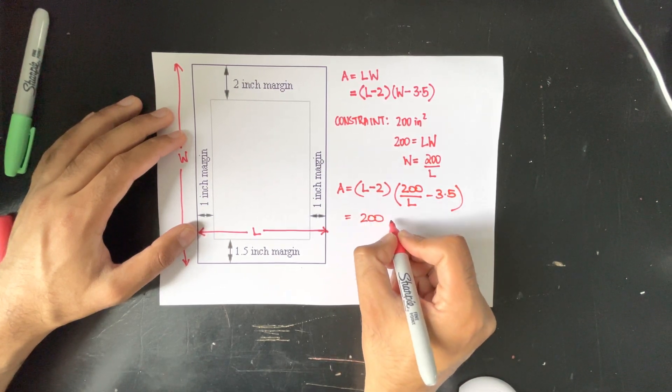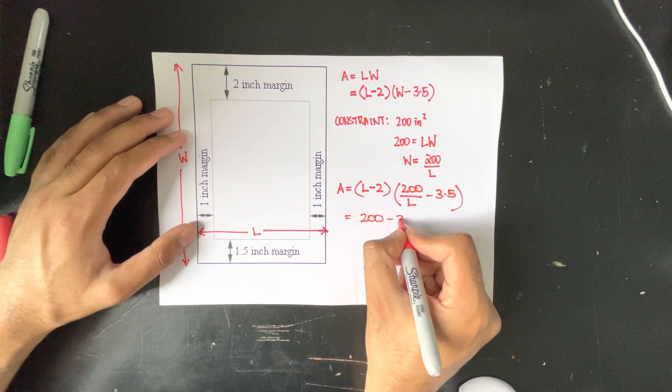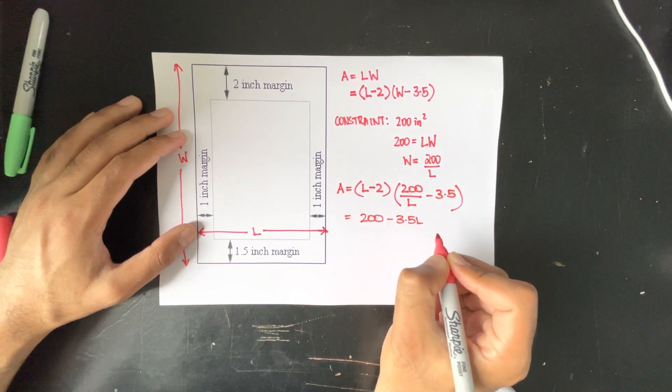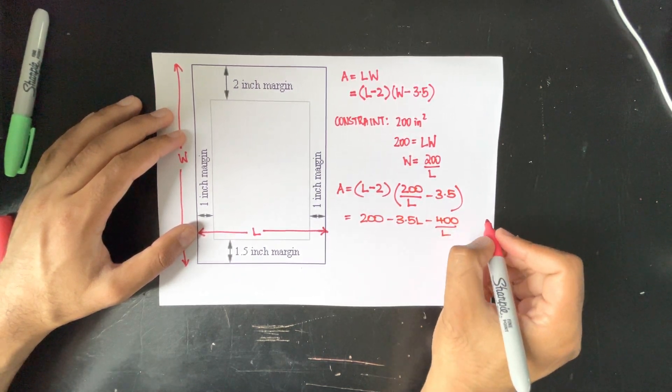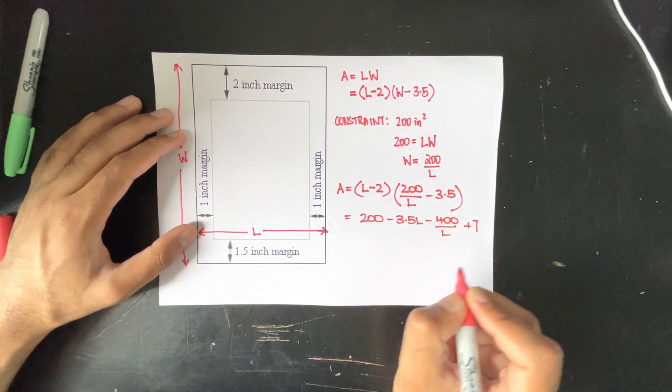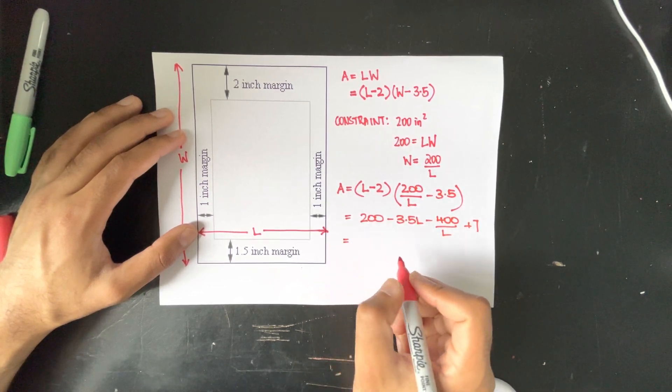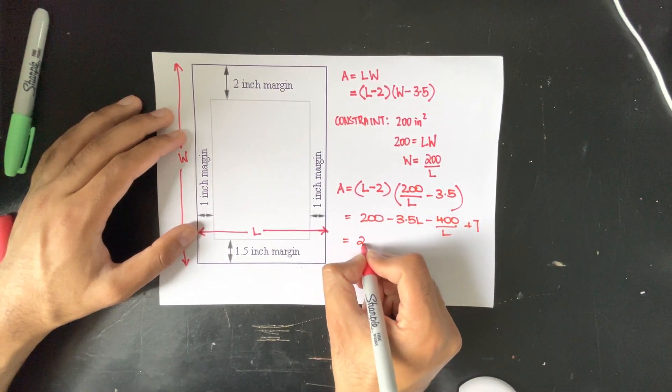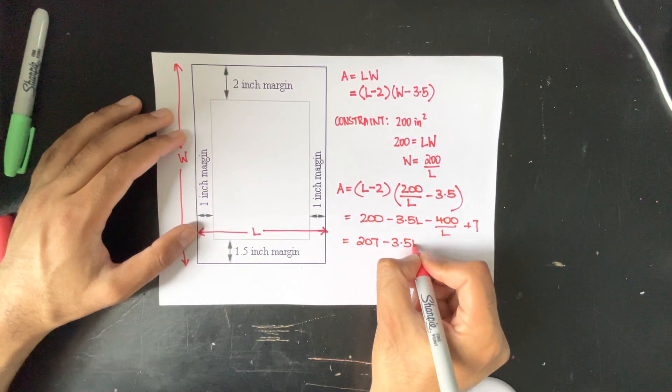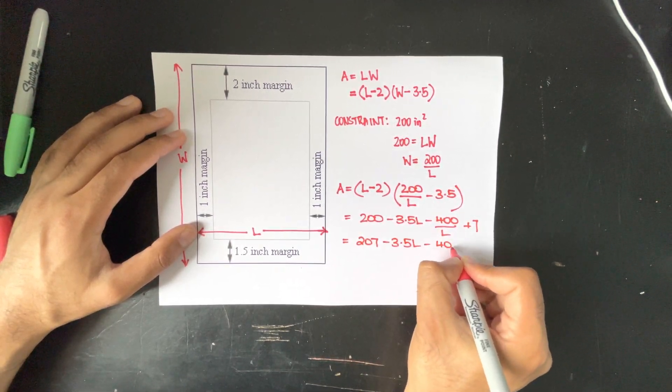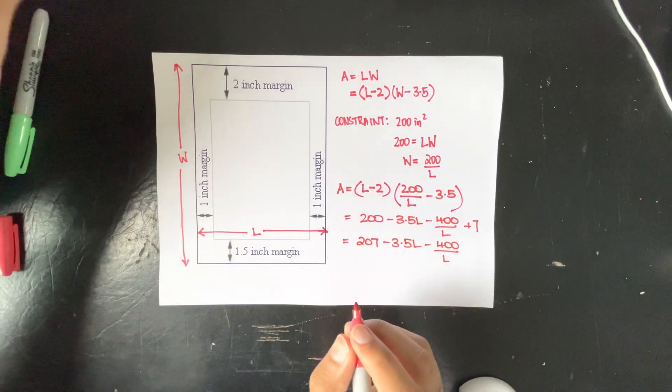Collecting like terms we will get 207 minus 3.5L minus 400 over L and that is what we will be taking the derivative of.